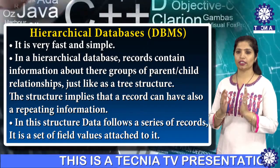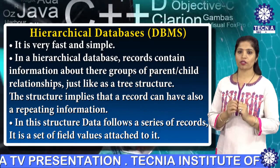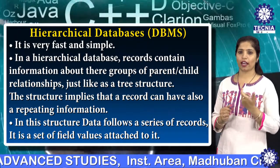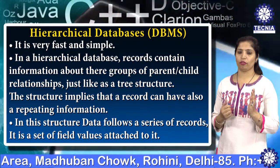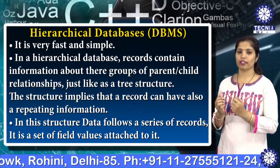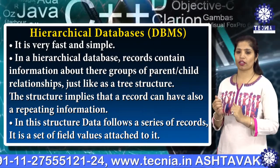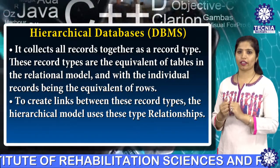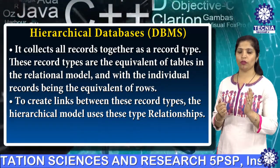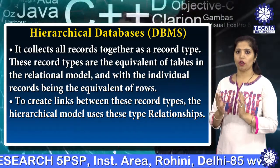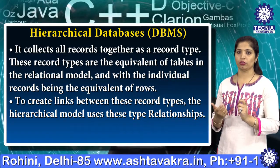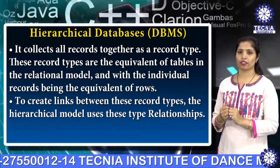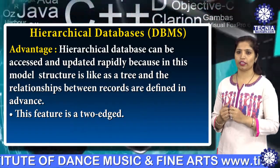In the hierarchical database, the records contain information with parent-child relationships, just like a tree structure. The structure implies that a record can have repeating information. Data follows in a series of records, each with a set of field values attached to it. All records are collected together as a record type, which is equivalent to tables in a relational model, with individual records being equivalent to rows.